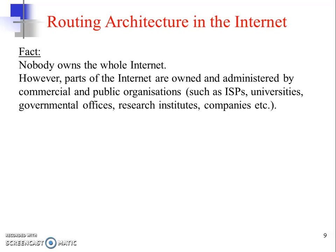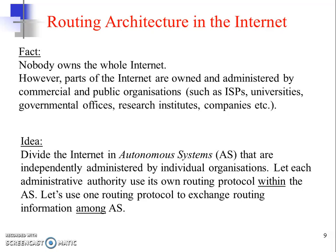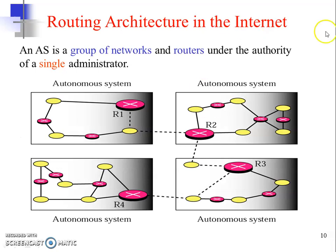The entire idea of routing is based on the division of the internet into various parts called autonomous systems, or AS. These AS are independently administered by individual organizations, meaning each administrative authority uses its own routing protocol within its autonomous system. An AS is a group of networks and routers under the authority of a single administrator.